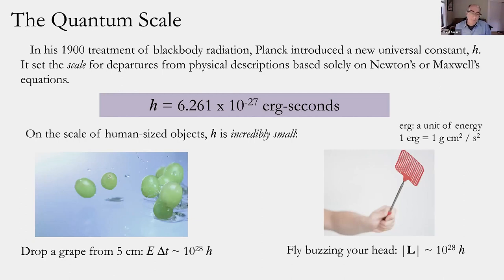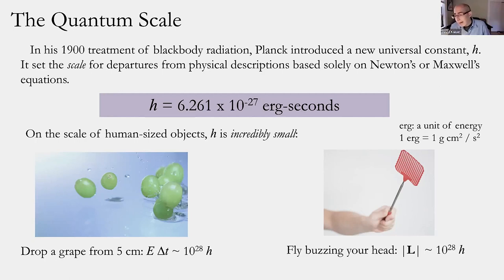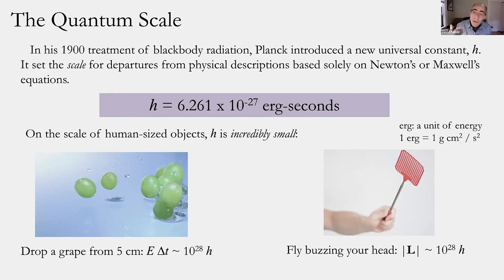To illustrate how small h is: drop a single grape from five centimeters high, multiply its acquired kinetic energy by the duration of its fall — roughly a second — and you get around 10²⁸ in Planck units. Similarly, a housefly buzzing lazily around your head has angular momentum around 10²⁸ in units of Planck's constant. These are not scales where we expect to find strange quantum features in everyday life. And yet Planck could only make sense of the PTR data by introducing this new, very small but non-zero constant.